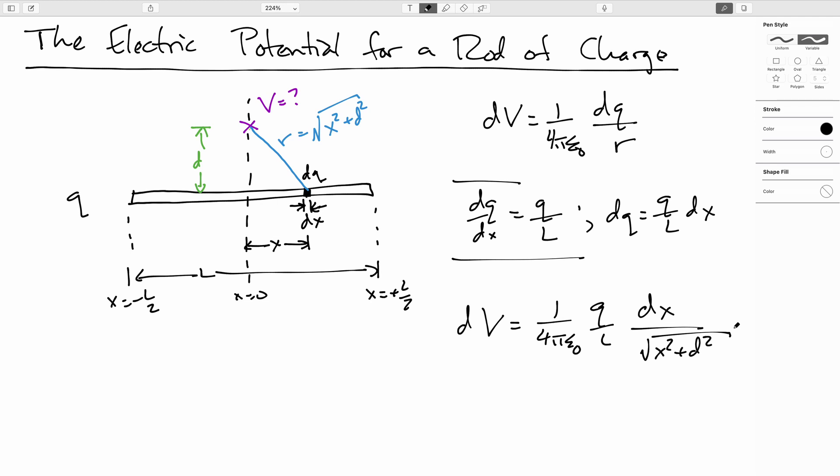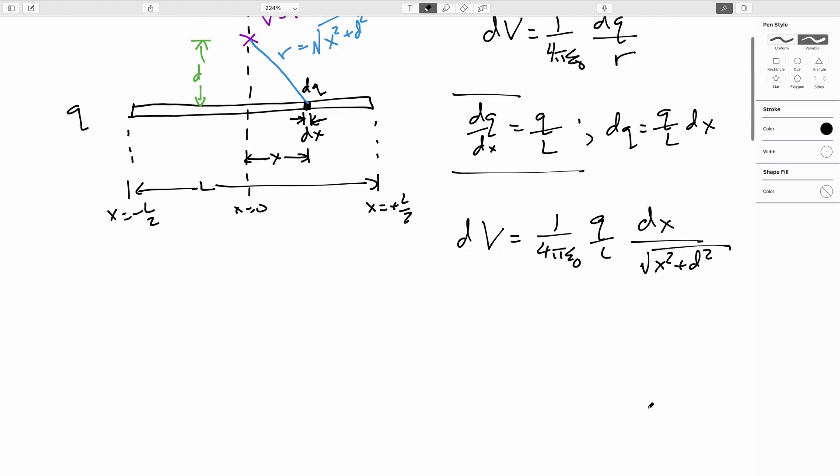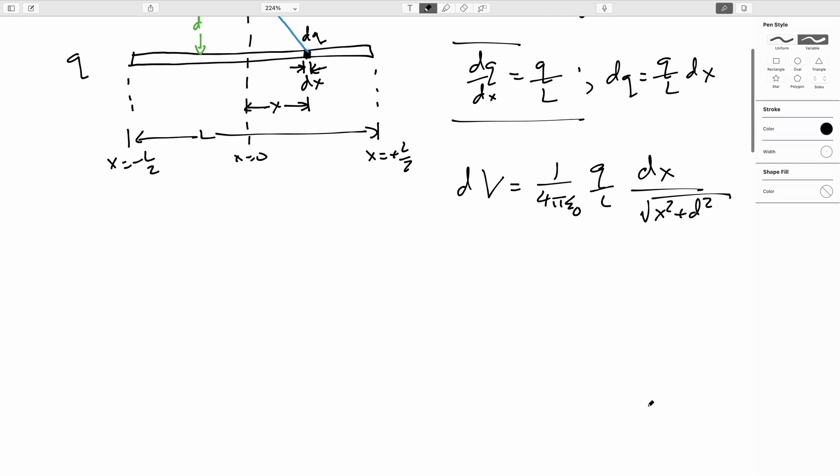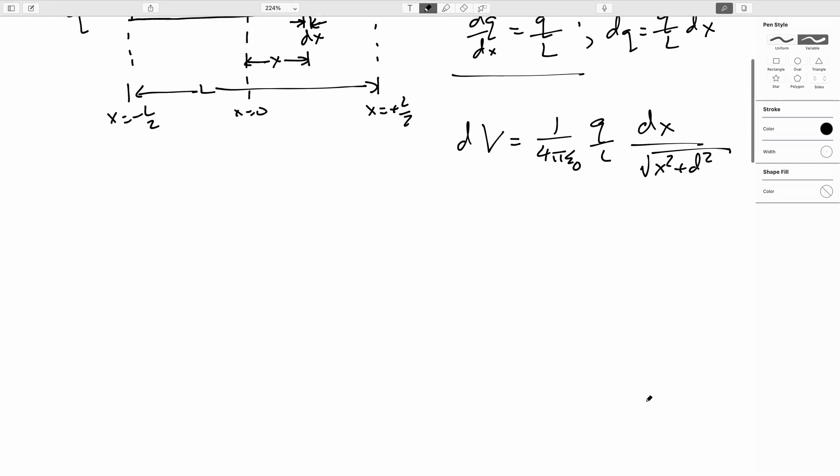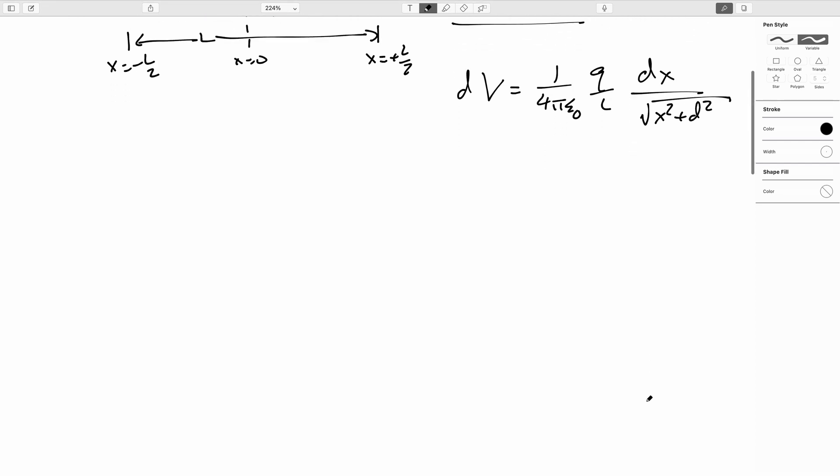Notice here that unlike when we're doing this with electric fields, I'm not taking any components. Why is that? Pause and get back with me. I'm not taking any components because the electric potential is a scalar. So, that's the beauty of working with potentials. And then later, if we need to get the electric field, once we develop the clever tricks with derivatives, we'll just do those clever tricks and away we go.